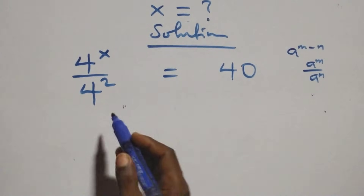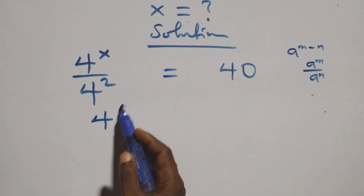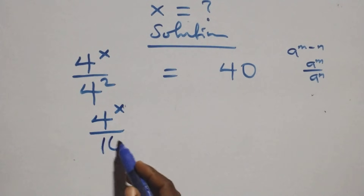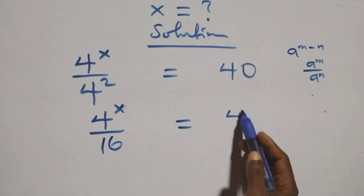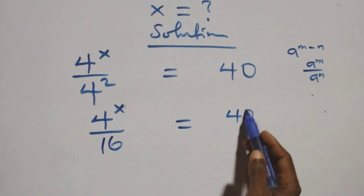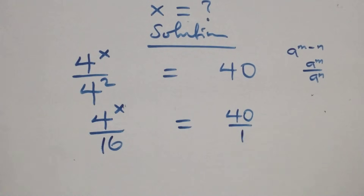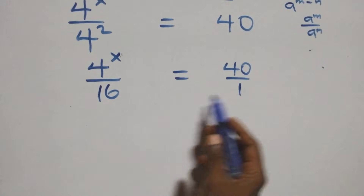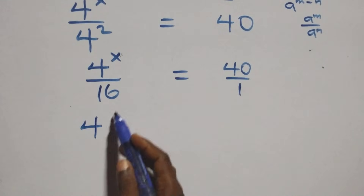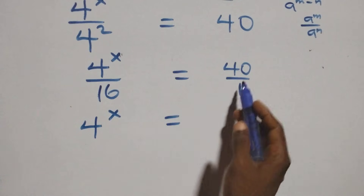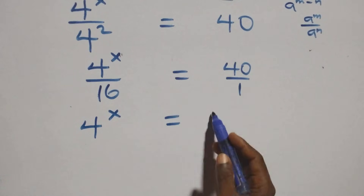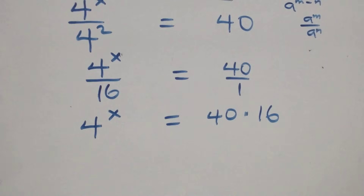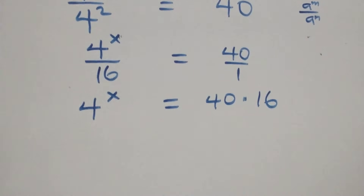This is the same as 4 raised to power x over 4 squared plus 16 equals 40 over 1. The next step is to cross multiply: 4 raised to power x times 1 equals 40 times 16.